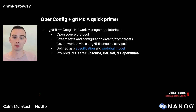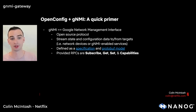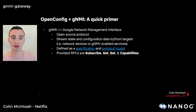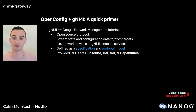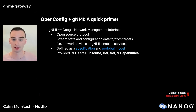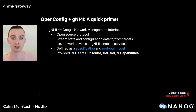Subscribe is the RPC which we primarily use, where our network tooling sends a subscribe request to our network devices and in return receives a stream of updates about the state of the device. Get and set provide the functionality that you would expect — getting and setting specific pieces of data — and capabilities describes the services and data models supported by the target device.